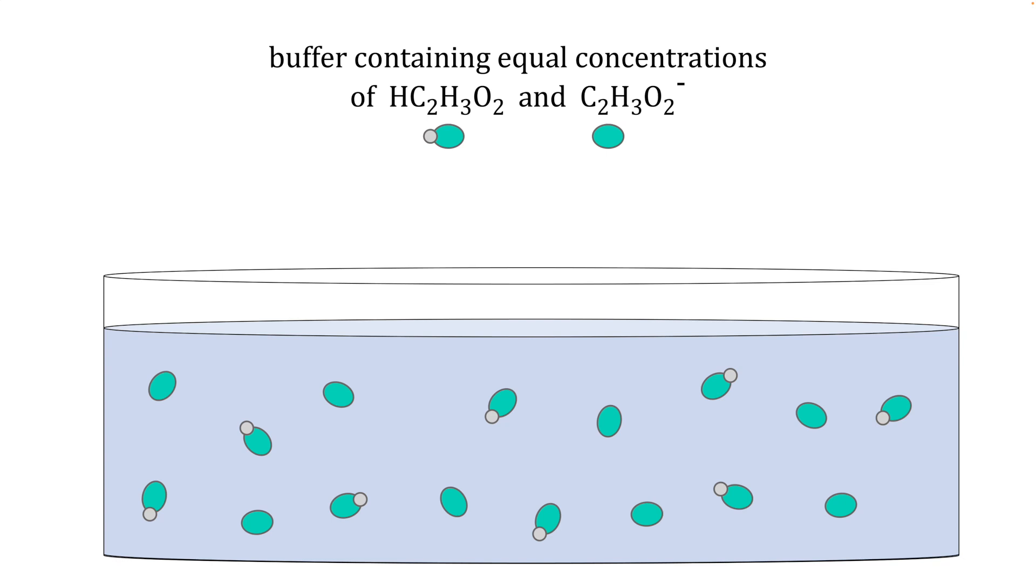Here we have a buffer containing equal concentrations of acetic acid and acetate ion. In the beaker we have a particulate level representation of 8 acetic acid molecules and 8 acetate ions. This buffer solution has a pH of 4.75 at 25 degrees Celsius.